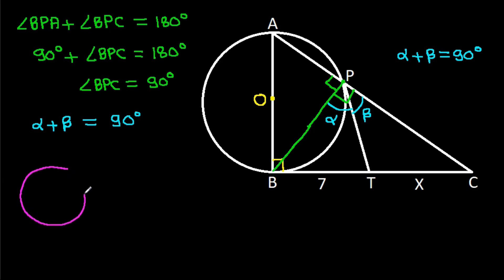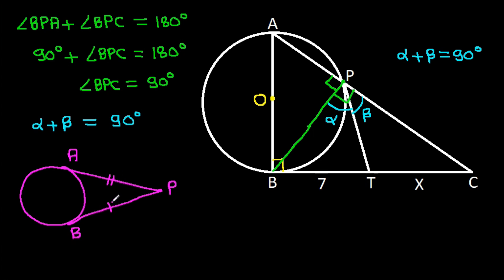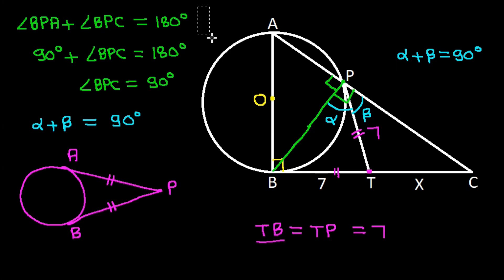In any circle, from any external point, if we draw two tangents to the circle, the tangent lengths from that point are equal. So on point T, TP will be equal to TB, and TP will also be equal to TC. Since TB is 7, TP will be 7.